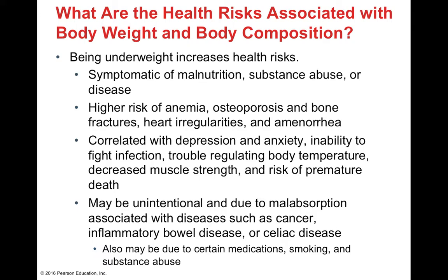Just like being overweight increases health risk, so does being underweight. It is a symptom of malnutrition, sometimes substance abuse, and oftentimes disease. These individuals have a higher risk of anemia, osteoporosis, bone fractures, heart irregularities such as murmurs, and amenorrhea or lack of menstrual cycle in females, which can be related to infertility or subfertility. They are also correlated with depression and anxiety, have a lower ability to fight off infections, issues regulating body temperature, decreased muscle strength, and risk of premature death. These health risks might be unintentional due to malabsorption from conditions such as cancer, irritable bowel, inflammatory bowel, or celiac disease.